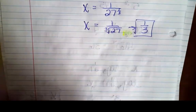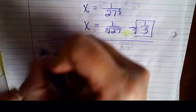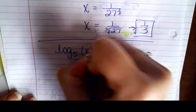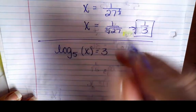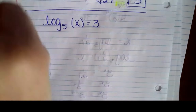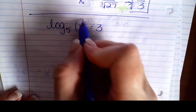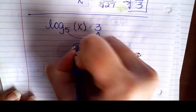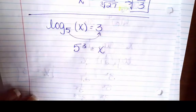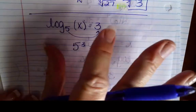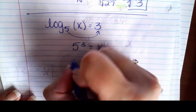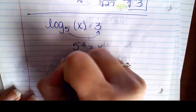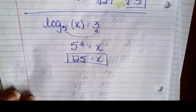So we're going to solve another one. I've got log base 5 of x equals 3. I've got a log on one side, something else on the other. I'm going to do the backward circle: 5 to the third equals x. I know what 5 to the third is — it's 5 times 5 times 5, which is 125. So my answer is 125.